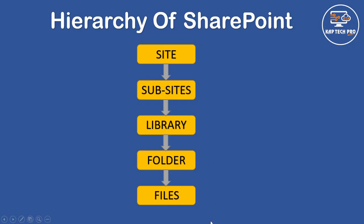In the previous video, we created this kind of a structure. First we have a site, then after the site we created a library, then a folder, and then files. There is a permission set at the site level and it's inheriting permissions down. So whatever users have permission on the site, they are automatically getting permissions on the library, folders, and files.